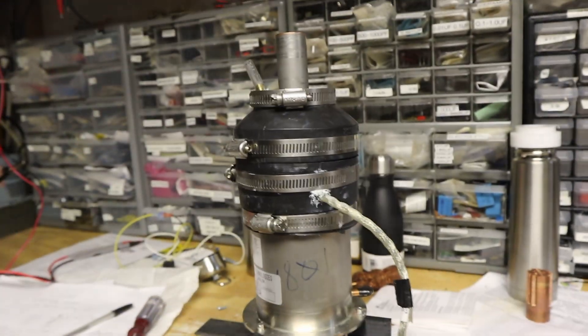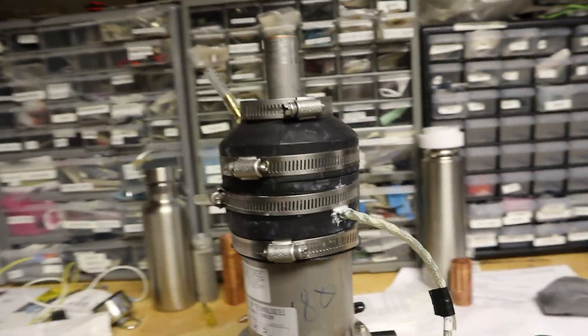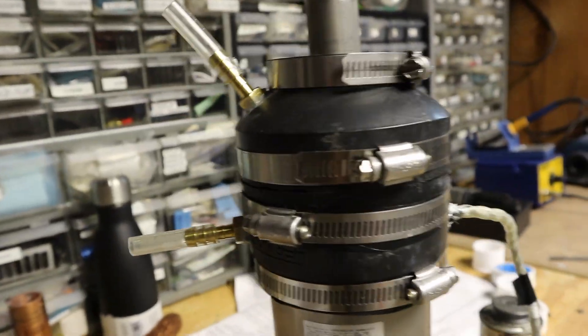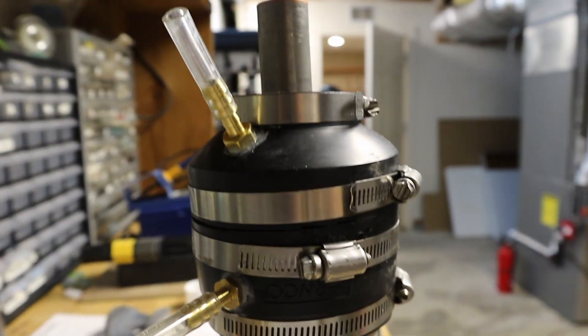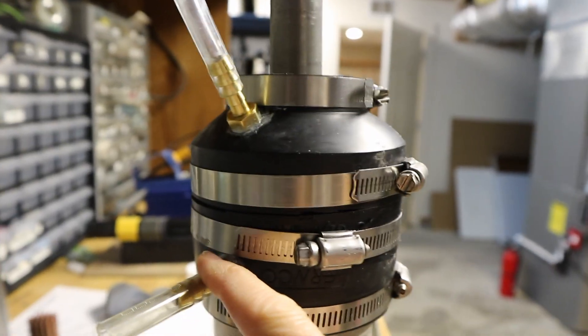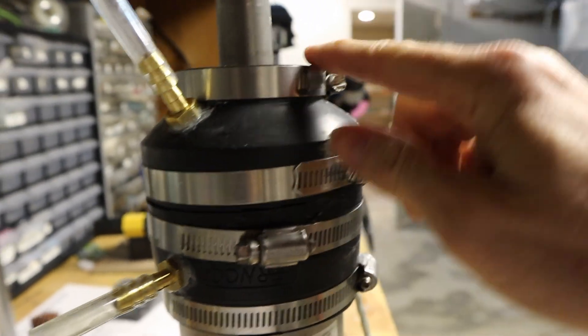This is the finished water cooling jacket. It wraps around the heat rejection end of the cryocooler. An inlet port, an outlet port, the clamps.